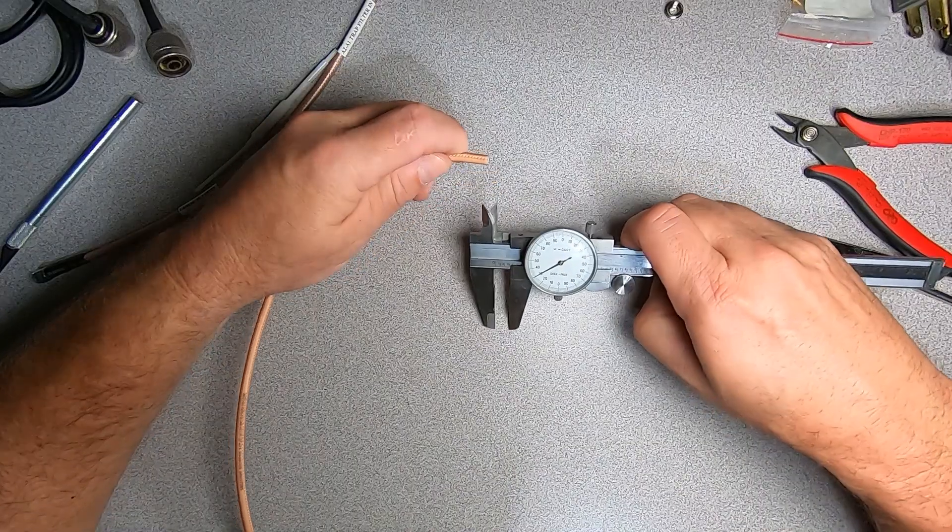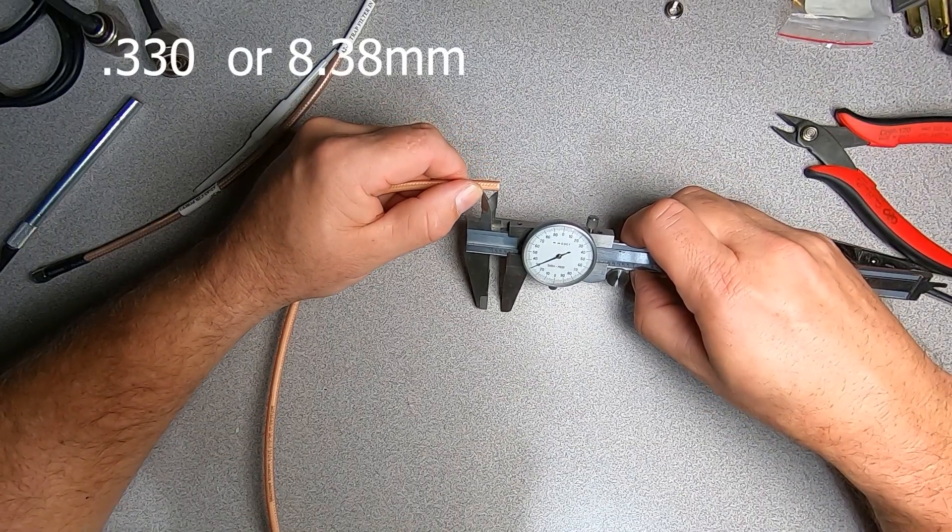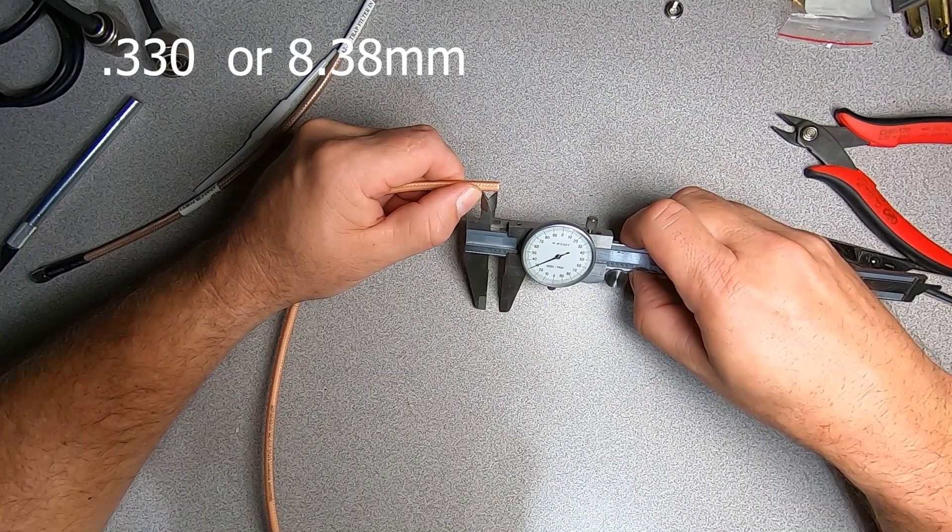The dimensions we need to remove for this particular connector are we need to remove the outer jacket to a dimension of 0.330.